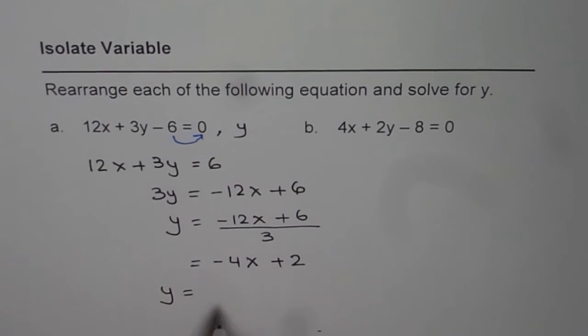We can write down y equals minus 4x plus 2. So that is how we can isolate the variable y from the given equation. I will suggest you can pause the video, copy this question and solve. That will give you good practice. Thank you and all the best.